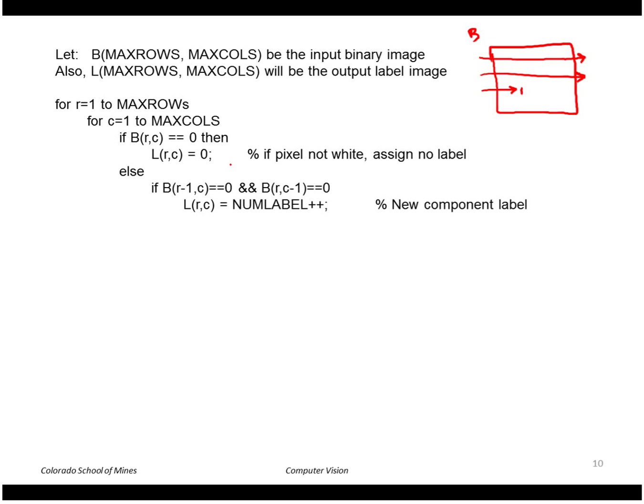But if we do have a one, then we have to consider a number of possibilities here. So the first possibility is that the neighbor to the left is a zero and the neighbor above is zero. By the way, I'm assuming four connectivity in this example. If that's the case, then basically we found a new region. So we create a new label number and we assign it to L at that point.